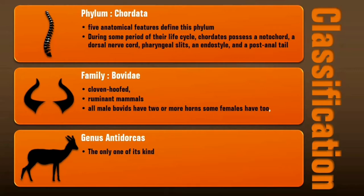When we look at the Springbok, it first falls under the phylum Chordata. There are five anatomical features used to classify organisms in this phylum, including a notochord, a nerve cord, a pharyngeal slit, an endostyle, and a post-anal tail. Then it falls in the family Bovidae, which includes cloven-hooved ruminant mammals. All the males will have horns and some of the females will have horns. And then it has its own genus, Antidorcas.